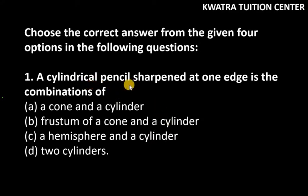It says a cylindrical pencil sharpened at one edge is the combination of... The information we have given is that the pencil's shape is cylindrical. Now, we say that one side is sharp.